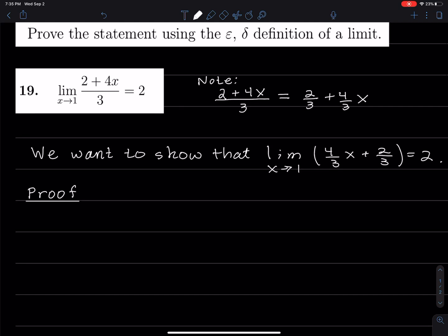I'm going to say, given epsilon greater than 0, choose delta. And we've talked about before, how do you find delta if we are looking at a linear function?